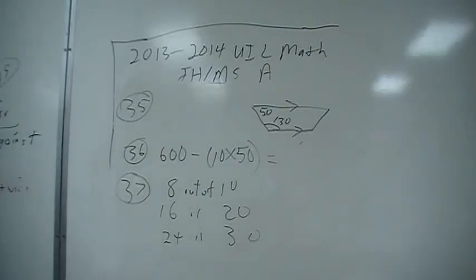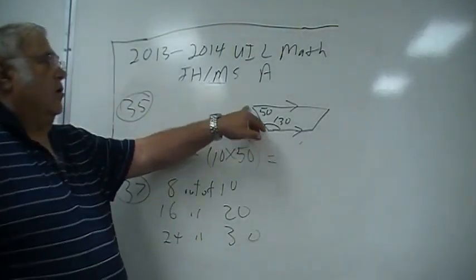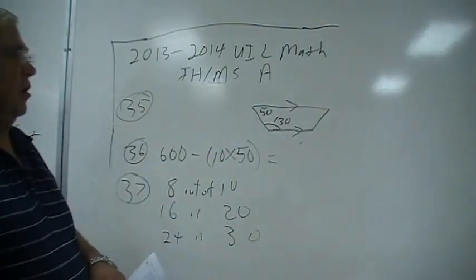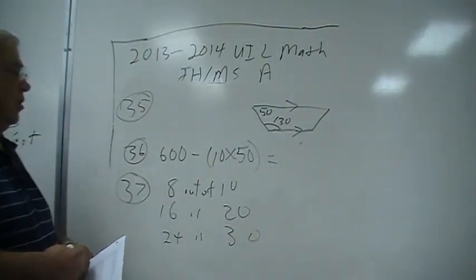Problem 35: You have a trapezoid. They give you this 50. If you realize that consecutive angles in a trapezoid are supplementary, then you know the answer is 130.